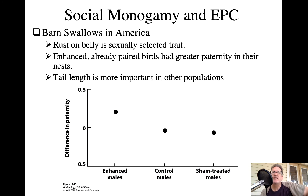In European barn swallow populations, tail length is more important as the sexually selected trait, while rust on the belly is more important in North American populations.